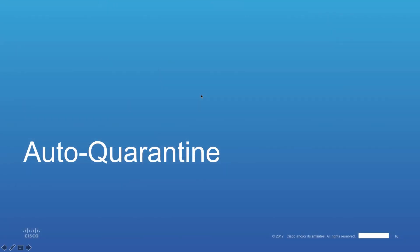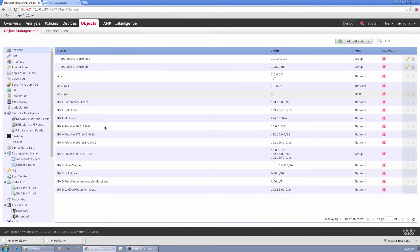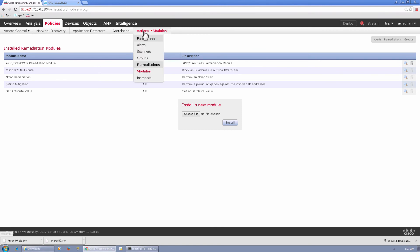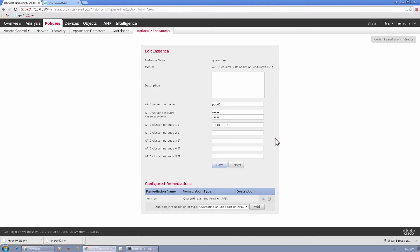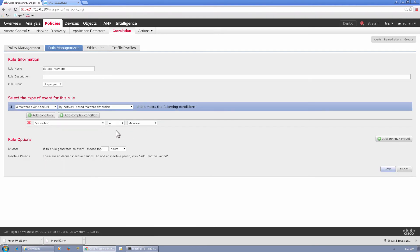Now let's look at the quarantine advantages with the remediation package. We have an FTD inspecting and blocking any attacks between app and DB, and when we detect an attack, we generate an event to FMC that triggers a correlation policy and executes remediation to APIC — isolating that host using microsegmentation EPG features in ACI. Under FMC policy actions, we have a remediation module for APIC installed, and under instances, we define credentials and the IP of APIC, including the remediation type. Under correlation policies, we have a rule configured that identifies malware with a known disposition.